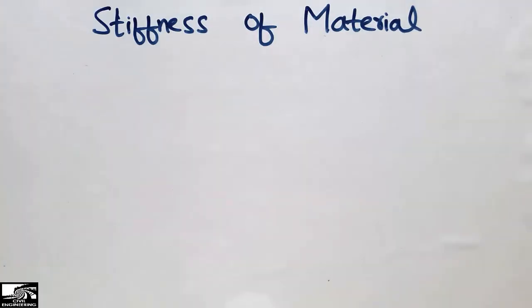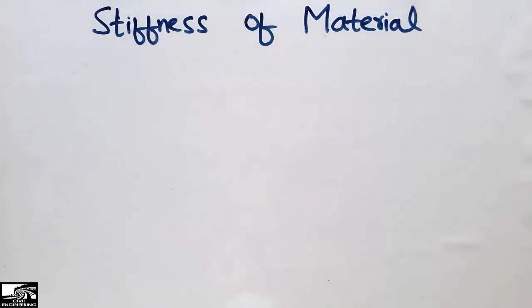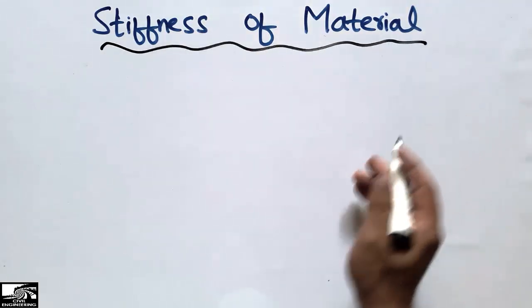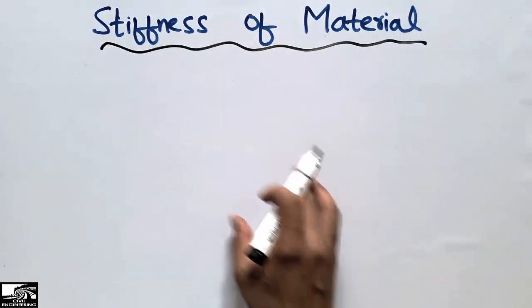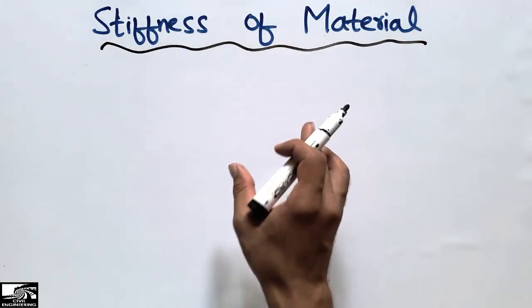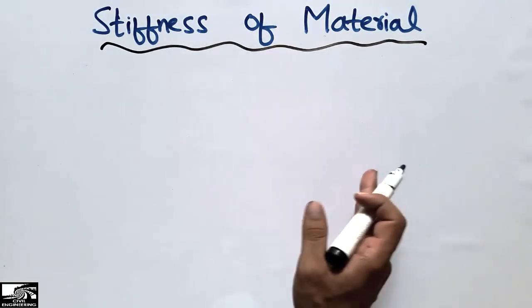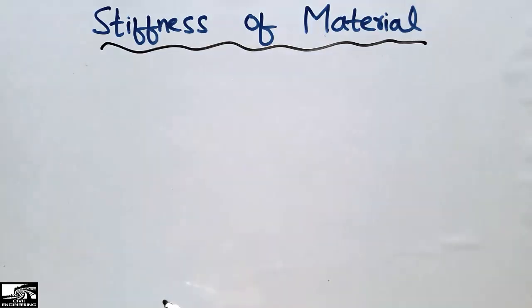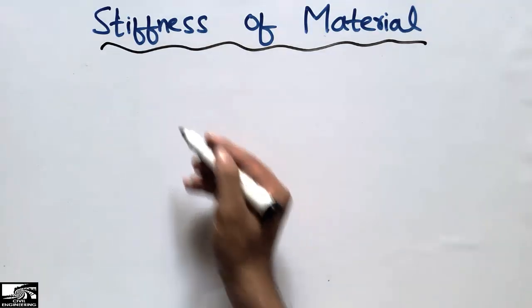Hello guys, welcome back to the C1 Engineering YouTube channel. Please subscribe to our channel for daily C1 engineering videos. Today our lecture is about the stiffness of the material. In this lecture we are going to define the stiffness and the two main types of stiffness: axial stiffness and bending stiffness.